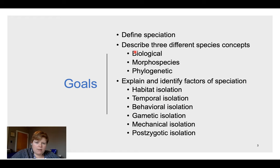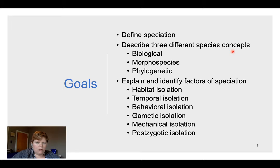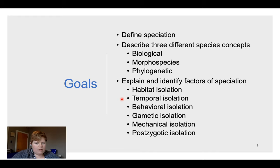My goals for this lesson: by the end, you will be able to define speciation — how we get a new species. We're going to look at three concepts of what a species is: the biological species concept, the morphospecies concept, and the phylogenetic species concept. My goal is also for you to explain and identify different factors of speciation, including what habitat isolation means and how to identify it in examples.